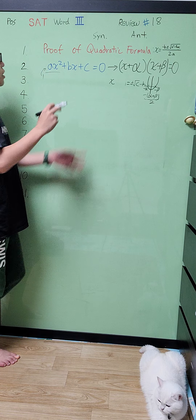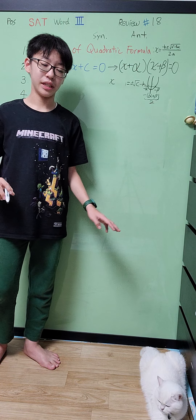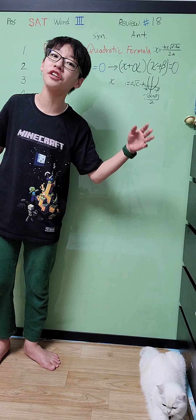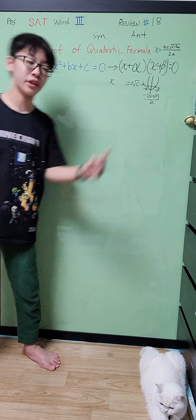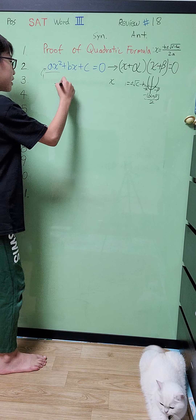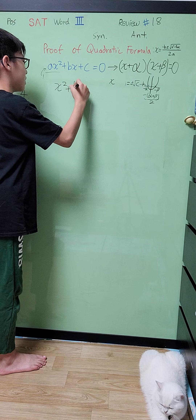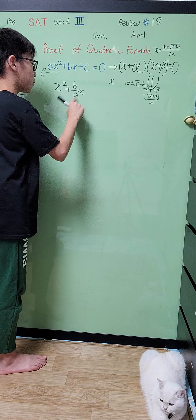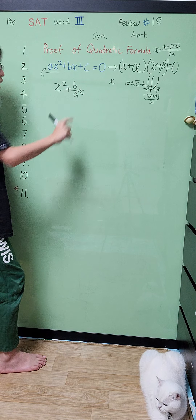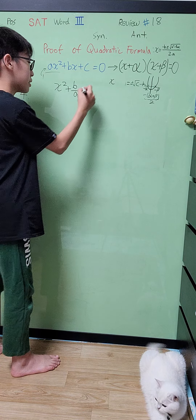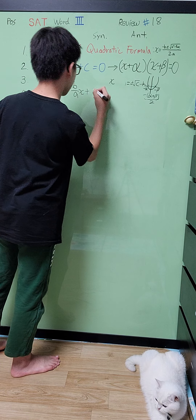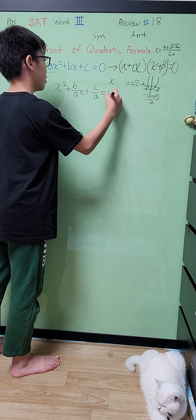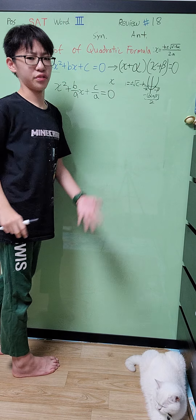First, divide everything by a, because that's the only way to turn the x squared coefficient into 1. So we get x squared plus (b/a)x — and there's a reason I'm not writing bx/a, remember that — plus c/a equals 0, because 0 divided by a is still 0.